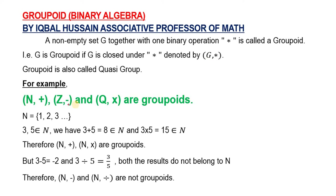Here we have three structures. First, natural numbers. If we take any two natural numbers and add them, we get a natural number. Hence, this algebraic structure is a groupoid. The set of natural numbers with addition forms a groupoid.